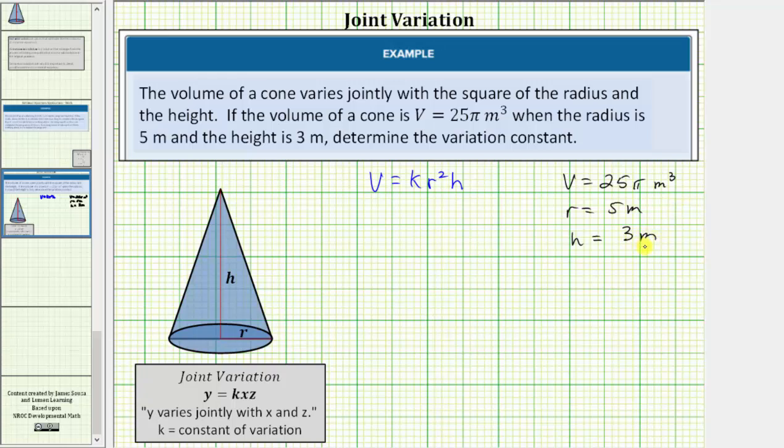So we'll substitute these values into our equation and solve for k. Performing the substitution, we'd have 25π equals k times r squared is 5 squared times h, or h is 3.